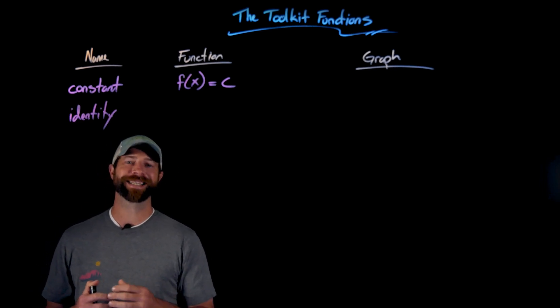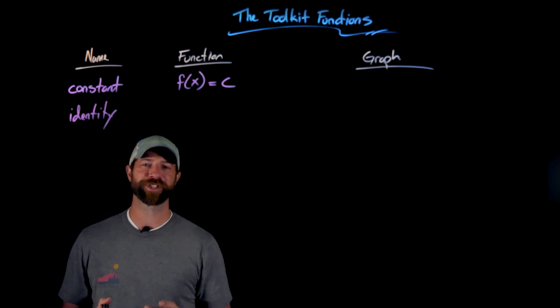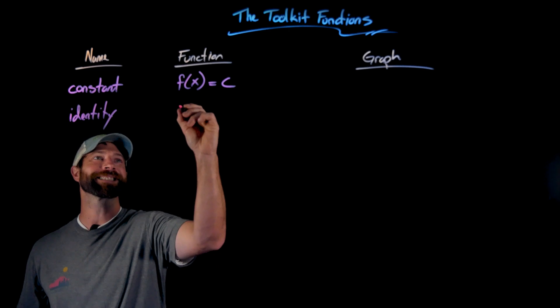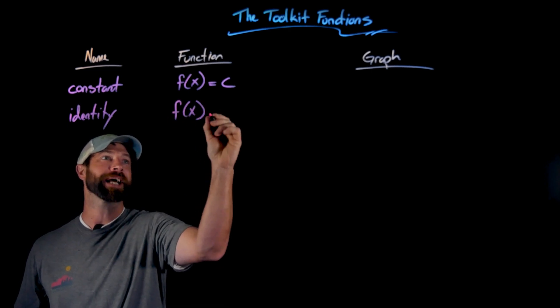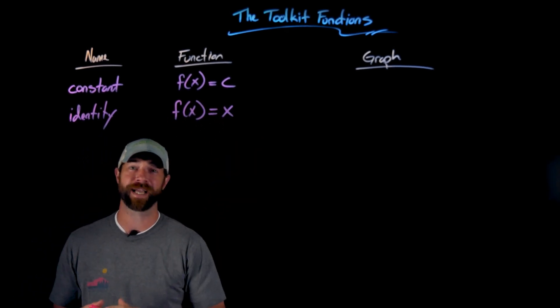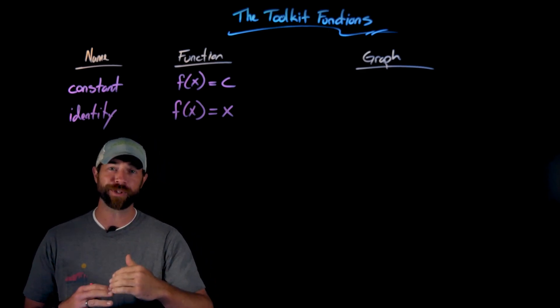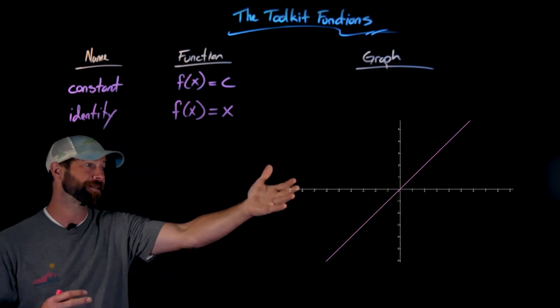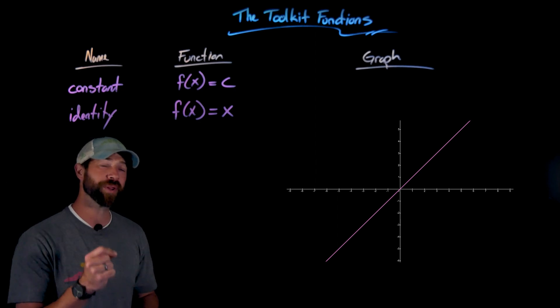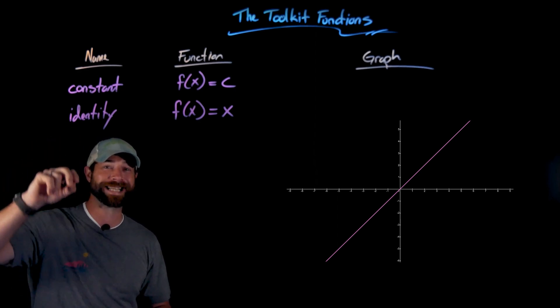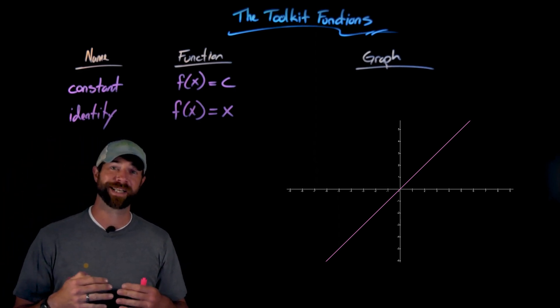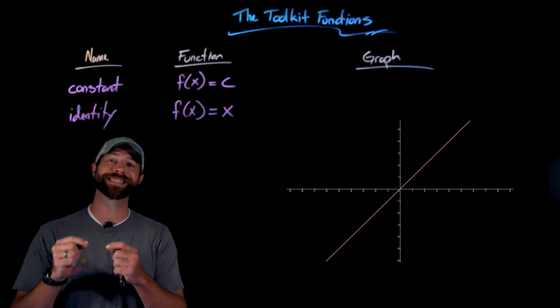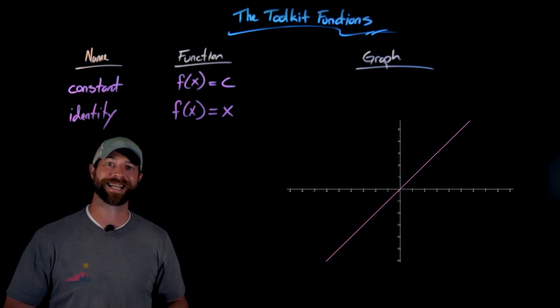The next toolkit is called the identity. It's actually an equation you've already seen before. In this case, it's f(x) equals x. This is exactly the same thing as the line y equals x—it goes through the origin and has a slope of one. It's very straightforward. The most important thing here is our calling it the identity. When we get into a conversation of inverse functions, you'll really see why we call it the identity function.